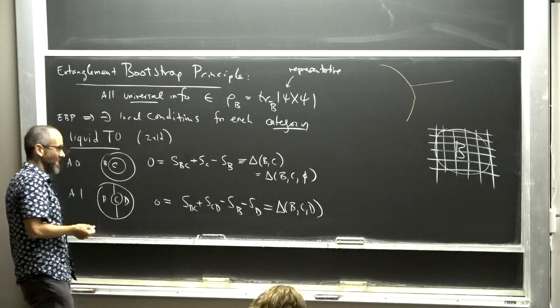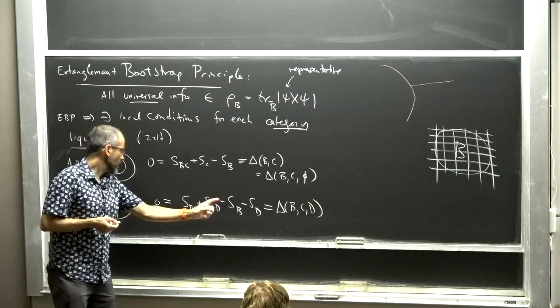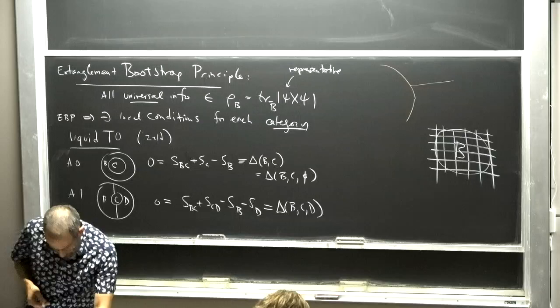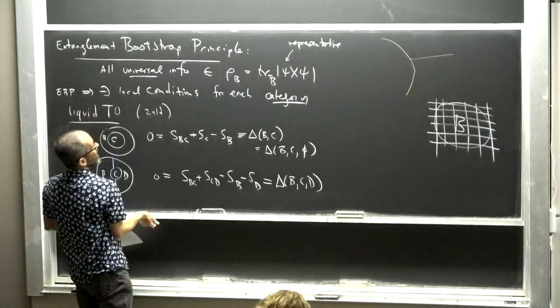I need to spend a few minutes explaining why it's a good idea to impose these conditions on a state. One thing I mentioned last time is that a state representing such a phase should satisfy an area law for the entanglement entropy of a disk, with a subleading term that is universal and interesting. One thing you can notice about these combinations of entropies is that the area law terms all cancel — the area law term is non-universal but completely disappears from these expressions.